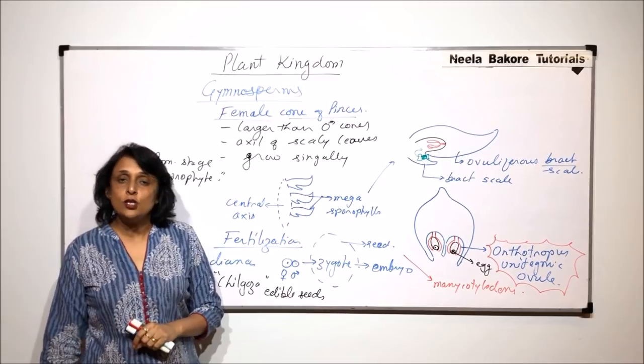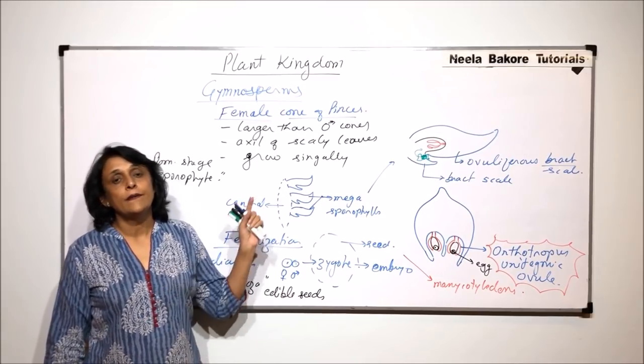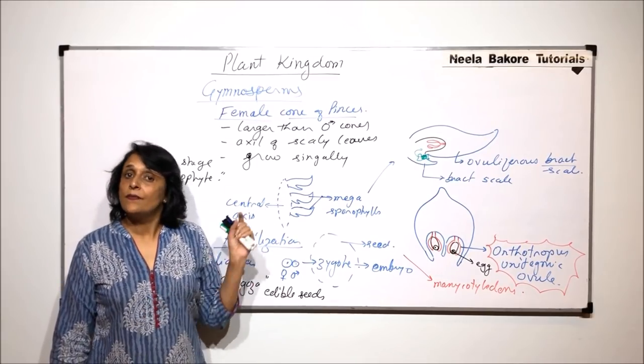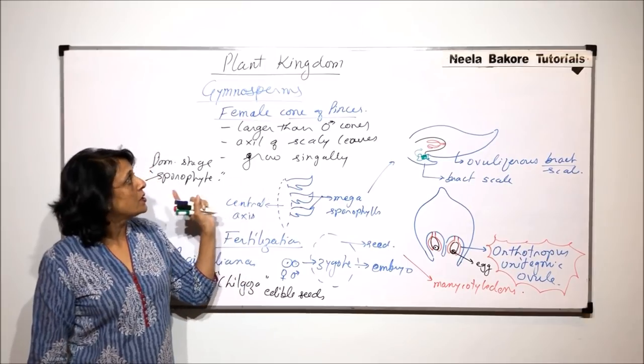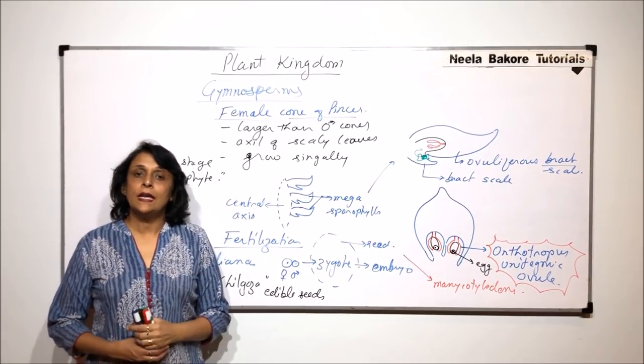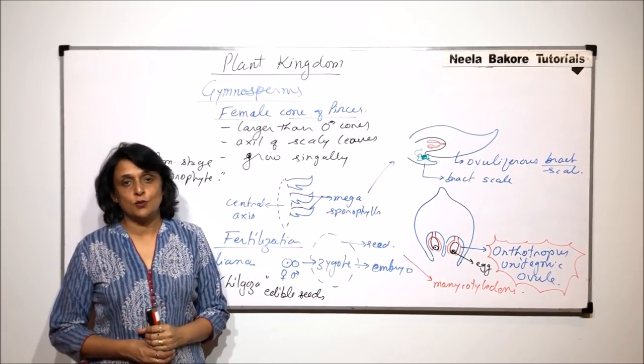When we come to angiosperms, there also we find that the predominant stage is the sporophyte. This is about Pinus. Now in the next part we will talk about some other gymnosperms.